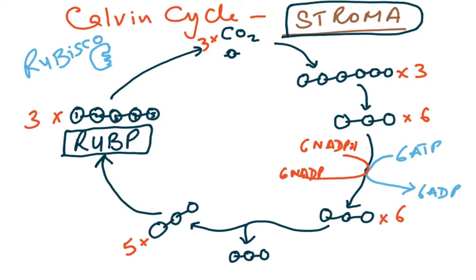RuBP stands for ribulose bisphosphate. There are three molecules of this five-carbon RuBP, giving a total of 15 carbons. These combine with three CO₂ molecules, adding three carbons, and this whole process is called CO₂ fixation.